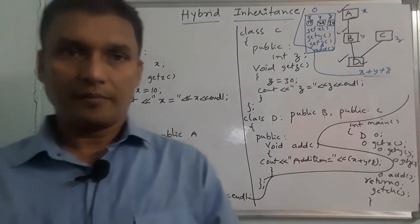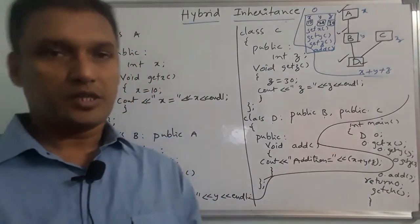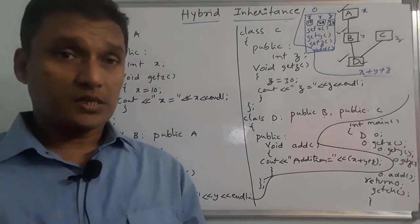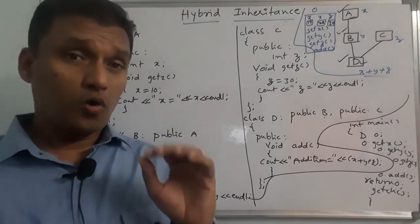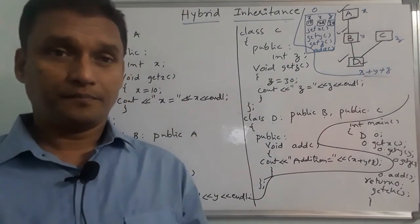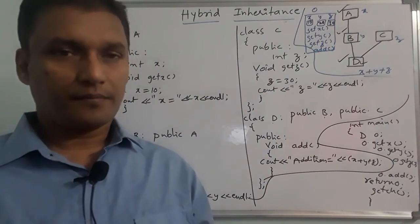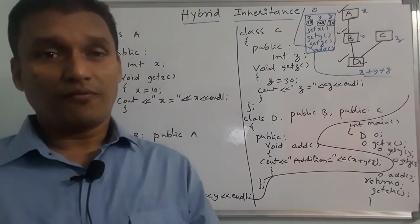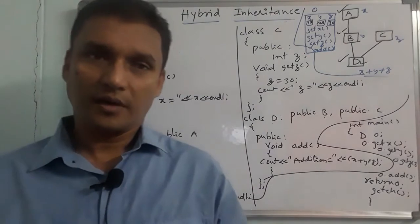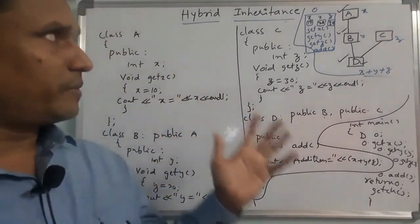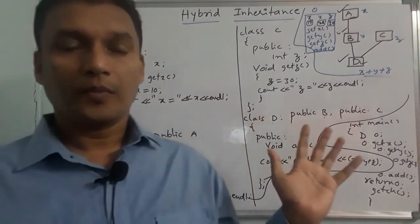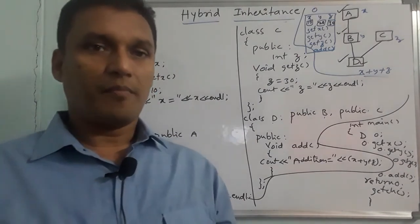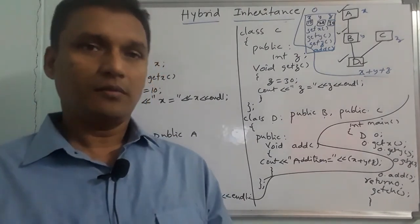Hybrid inheritance is implemented simply. Hybrid inheritance means it is the process of combining more than one type of inheritance into one form. That is nothing but hybrid inheritance. Based on the situation and requirement, we decide which types of inheritance to combine.